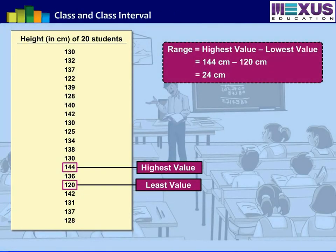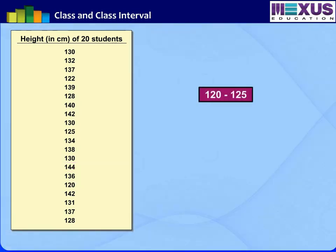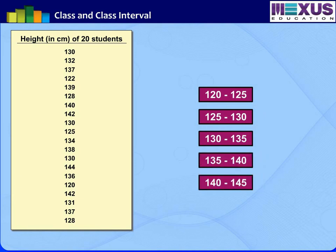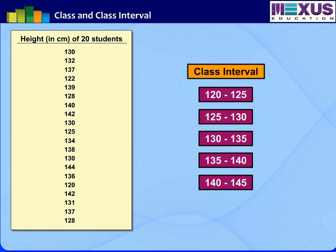As we know that the range of this data is 24, let's group this data in 5 classes: 120 to 125, 125 to 130, 130 to 135, 135 to 140, and 140 to 145. Each of these classes is known as a class interval.